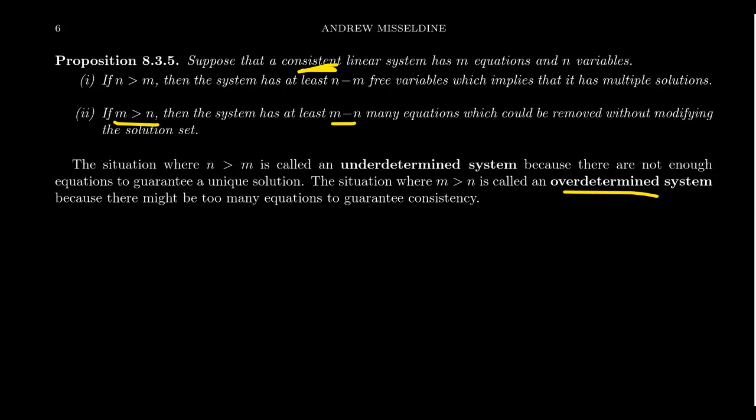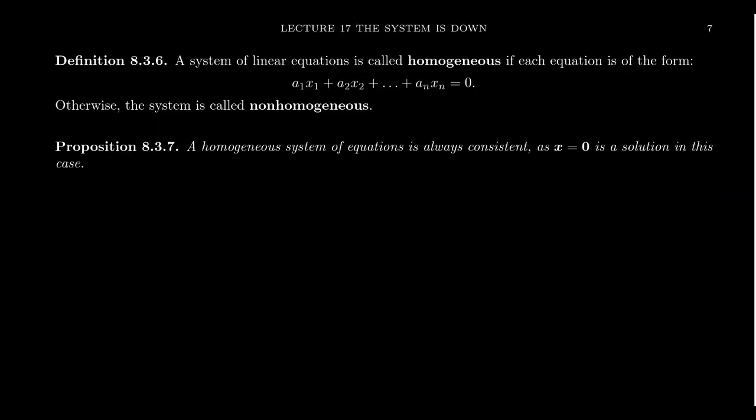If m is greater than n — more equations than variables — and the system is consistent, then some of the equations are redundant and could have been removed. This is called an overdetermined system. The sweet spot is when you have n equations and n variables, giving a square coefficient matrix. In the overdetermined case, the system is usually inconsistent because the excess information tends to conflict. Overdetermined systems will be relevant when we discuss the least squares problem later, where we find approximate solutions.